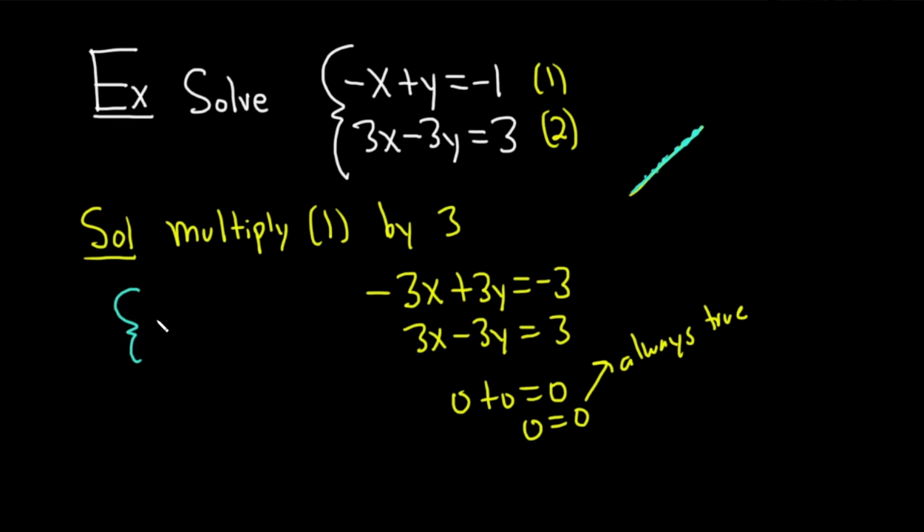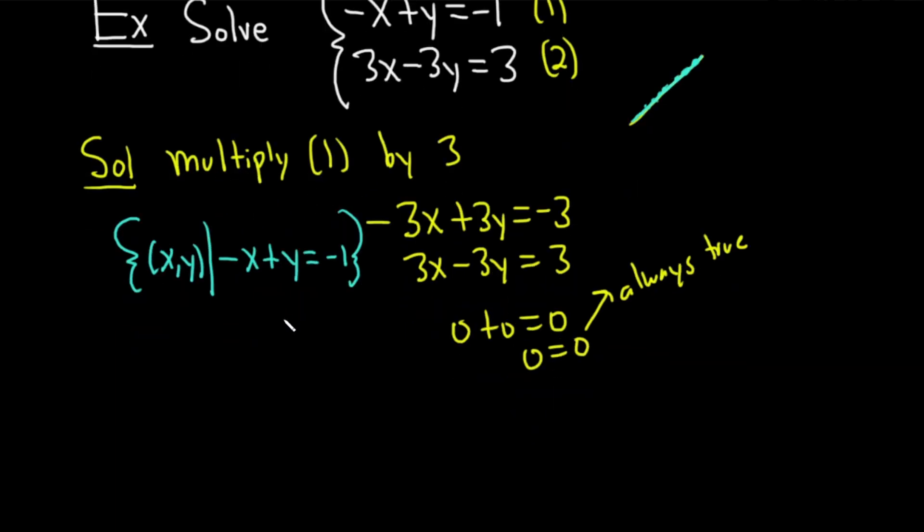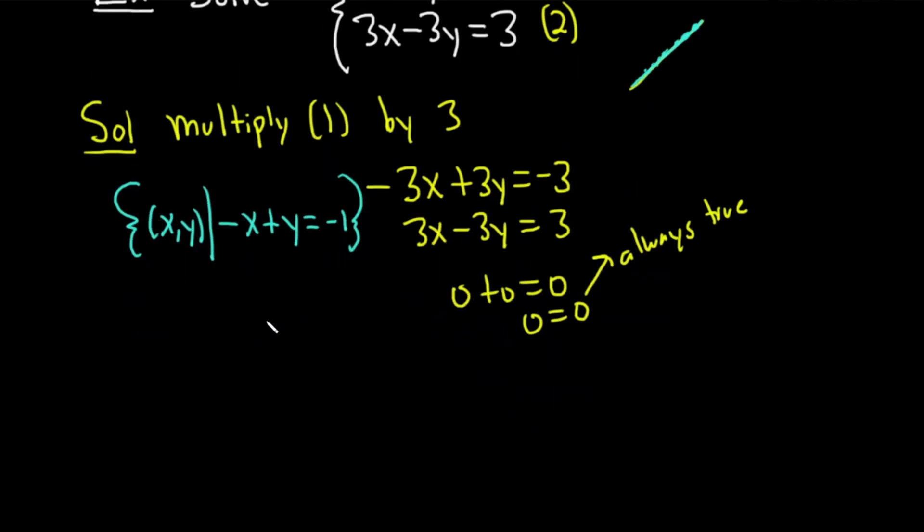The solution set is the set of ordered pairs x comma y such that x and y are on the line. What does that mean? What does it mean to be on the line? Well, it means that if you plug in your x and y into any of these equations, it's true. It means that negative x plus y equals negative 1. That's an acceptable answer. Some people like to use a third variable to find the answer. Here's another way to do it. So we know that this is one of our equations. You can solve this for y by adding x. We know that y is equal to x minus 1.